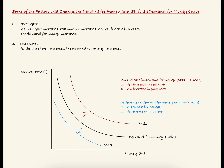Now let's talk about the leftward, or inward, shift of the demand for money curve from MD0 to MD2. This shift represents a decrease in the demand for money, which could be caused by a decrease in real GDP or a decrease in price level.